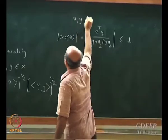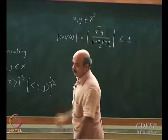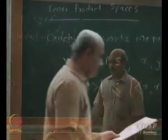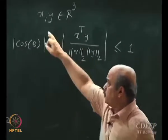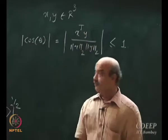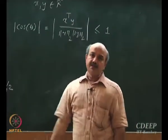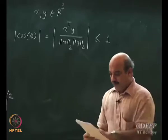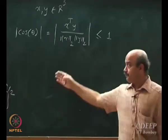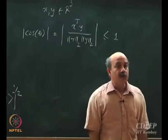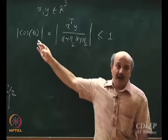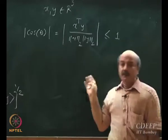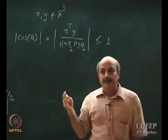In the case of three dimensions, X and Y are two vectors that belong to R3. This result from three-dimensional space is generalized by Cauchy-Schwarz inequality to any inner product space. We wanted to work on this inequality for two reasons: to define the concept of angle in a general inner product space, and to prove the triangle inequality in an inner product space.